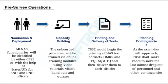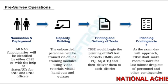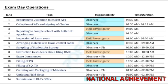Pre-survey operations: First step is nomination and deployment — all NAS functionaries will be identified by either CBSE or with the help of states or union territories for SNO and DNO officers. Second, capacity building — the onboarded personnel will be trained via online training modules using video tutorials, visual handouts, and quizzes. Third, printing and delivery of tools — CBSE will begin the printing of NAS test booklets in CQ, SQ, and TQ and then deliver them to each district. The last step is planning contingencies as the exam day approaches.